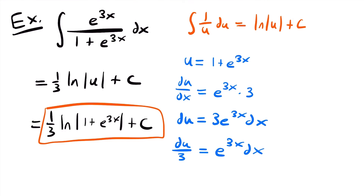A quick note: we can replace the absolute value bars with regular parentheses because e to the power of 3x always outputs a positive value, and adding 1 to it means the expression inside is always positive — so absolute value bars aren't necessary. That's all for this lesson. If you want more examples, check out the examples video linked at the end and in the description below. Leave any questions in the comments, and I'll see you next time.